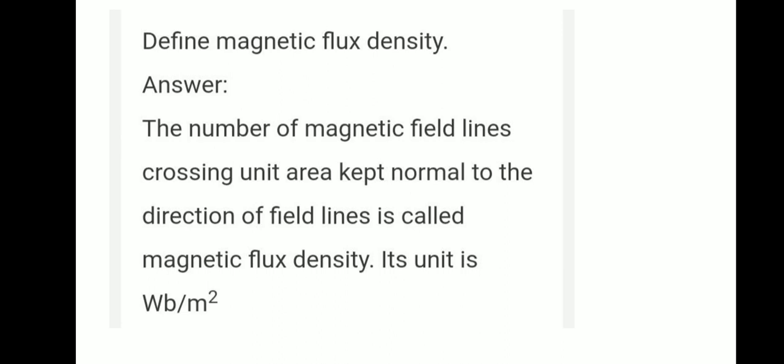Define magnetic flux density. The number of magnetic field lines crossing the unit area kept normal to the direction of field lines is called magnetic flux density. Its unit is Weber divided by meter square.